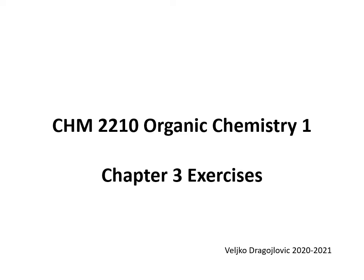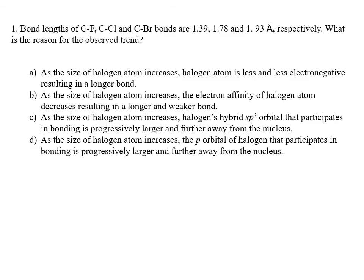In this video, we are going to review 6 questions related to material covered in Chapter 3. Bond lengths of carbon-fluorine, carbon-chlorine, and carbon-bromine bonds are 1.39, 1.78, and 1.93 angstroms respectively. What is the reason for the observed trend?